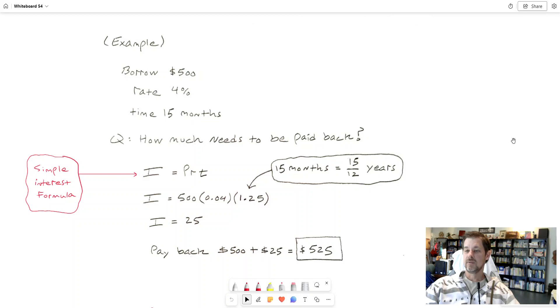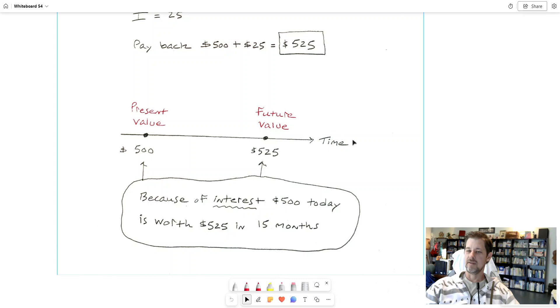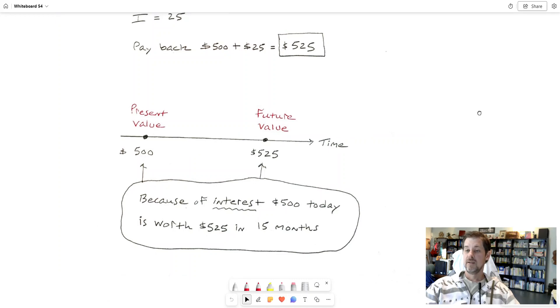So think about it like this: there's an element of time here because of the interest rate and because of the time that went by. Five hundred dollars today is worth 525 dollars in the future, because that's what separates past and future in this case, is that you borrowed 500 and then 15 months later you paid back 525.